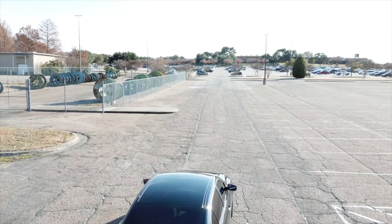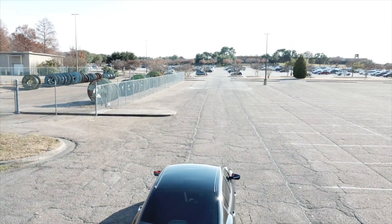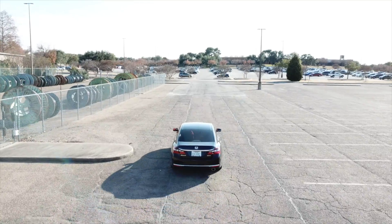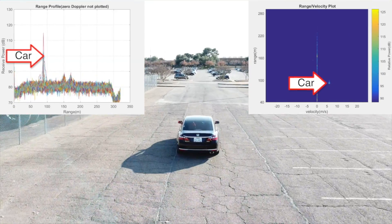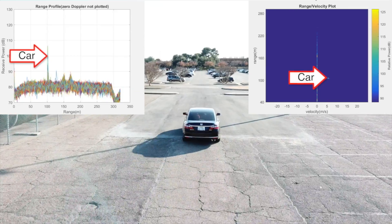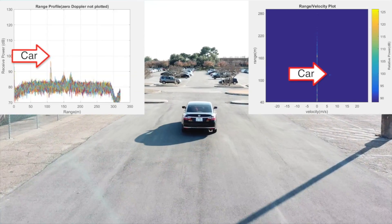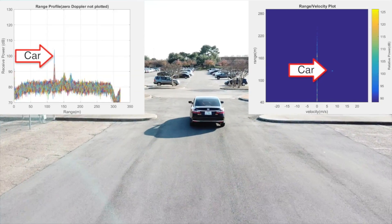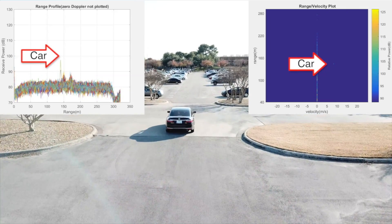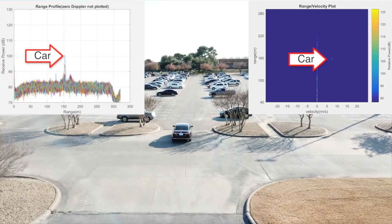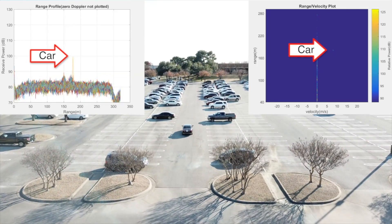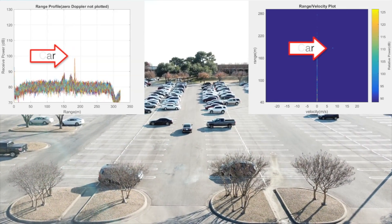In the last video, we demonstrate the cascade radar's ability to detect cars at far range. The cascade radar is operating in TX beamforming mode with 9TX transmitting at the same time. We can see that the car can be detected reliably at 250 meters. Due to space limitations, we can only showcase 250 meters today, but the radar can actually detect more than 250 meters.